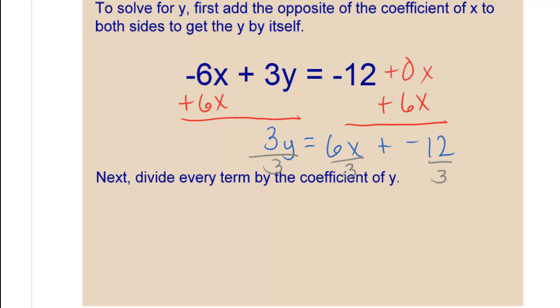When I simplify, I end up with y equals, 6 divided by 3 is 2, so that's 2x plus negative 12 divided by 3 is negative 4.